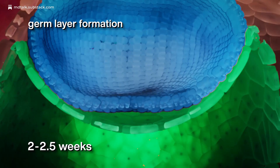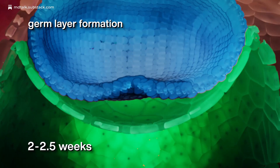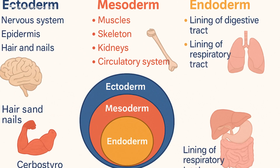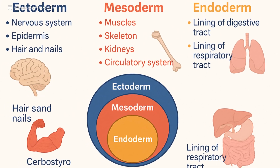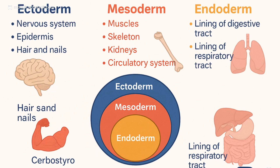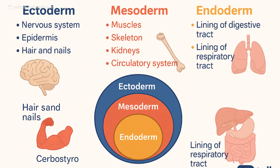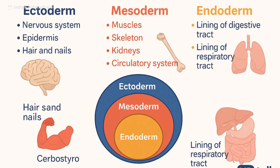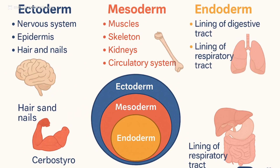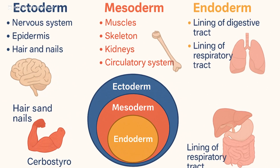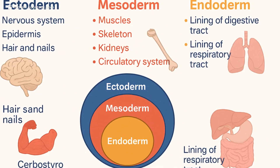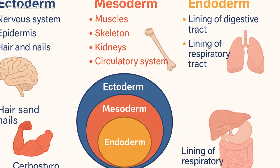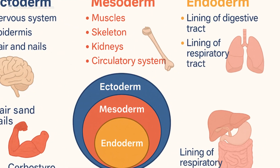Each germ layer carries a developmental destiny. Ectoderm gives rise to the nervous system, skin, hair, nails and sensory organs. Mesoderm forms muscles, bones, the cardiovascular system, kidneys, reproductive organs and the adrenal cortex.